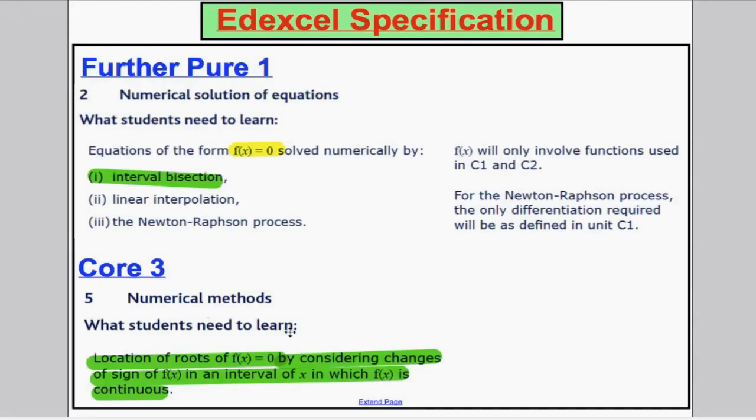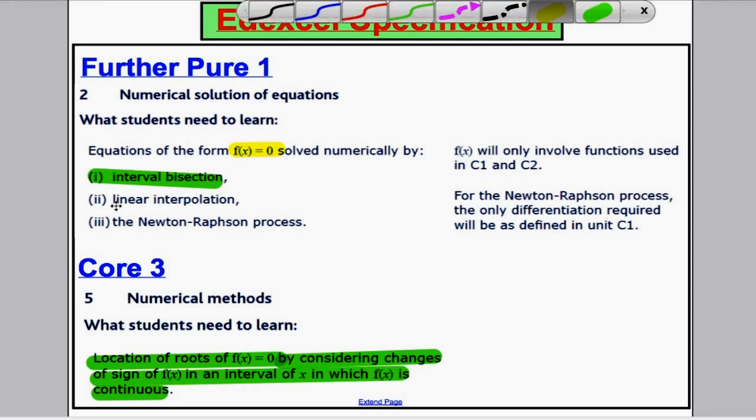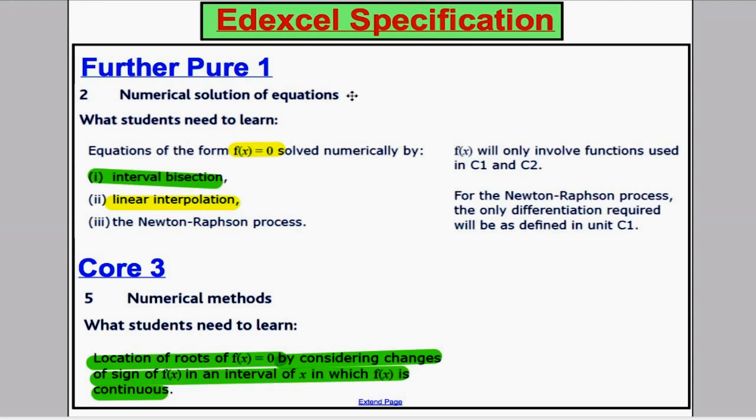Looking at the scheme of work, we talked about the change of sign rule firstly, and then we learned the interval bisection method. Now we're going to learn a method called linear interpolation.